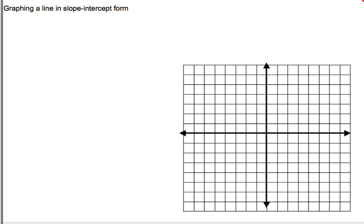Let's first talk about slope-intercept form. The form is y equals mx plus b. This form gives us a lot of information about how to graph.